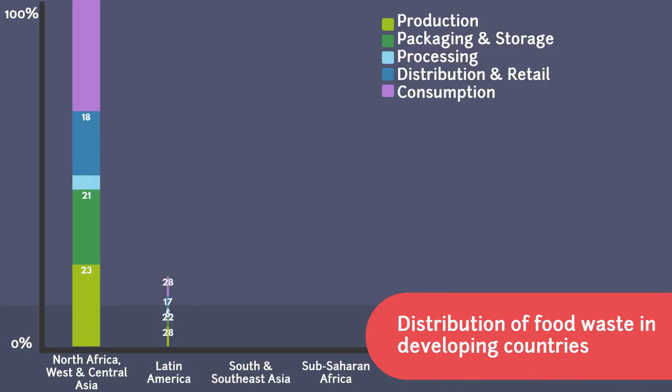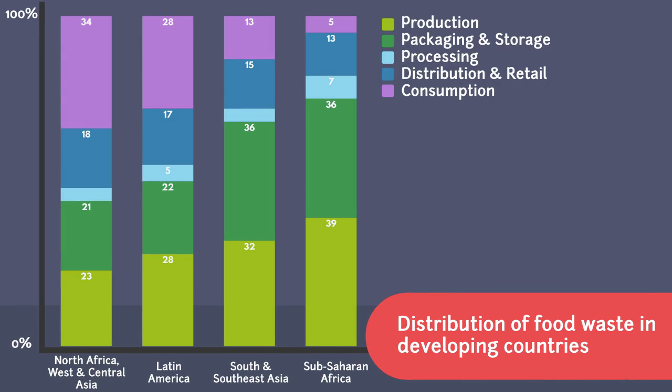On the contrary, this graph shows the distribution of food waste in developing countries, particularly in Southeast Asia and Sahara Africa. Production, storage and packaging departments account for one-third and three-thirds of post-harvest losses, respectively. Therefore, in developing countries, we need to focus on farm and post-farm processes in order to reduce post-harvest losses.